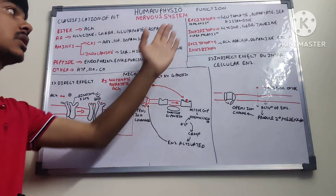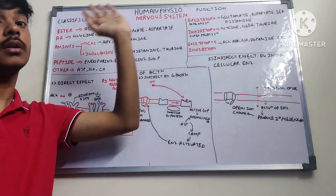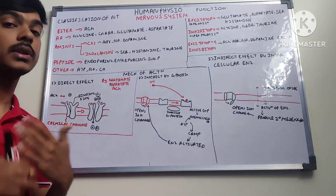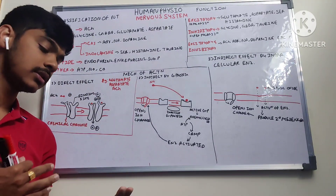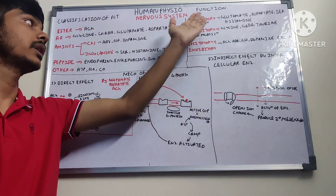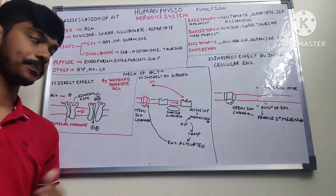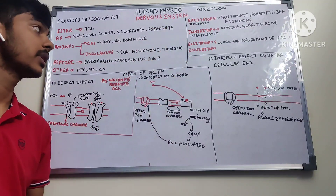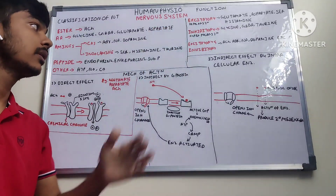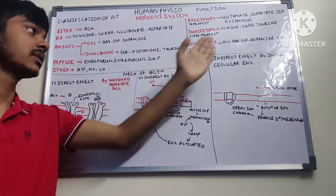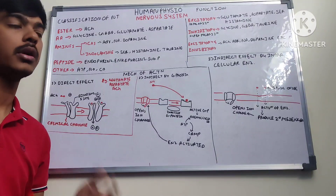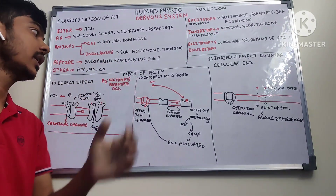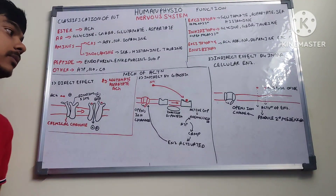Based on function, neurotransmitters can be classified as excitatory — causing depolarization — or inhibitory — causing hyperpolarization — or both. Excitatory examples: glutamate, aspartate, histamine. Inhibitory examples: glycine, tyramine, GABA — which cause hyperpolarization. Excitatory and inhibitory both: acetylcholine, adrenaline, noradrenaline, dopamine, and various miscellaneous neurotransmitters.